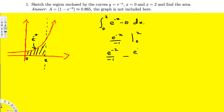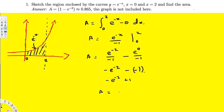Minus e^(0) divided by -1. Since e^(0) = 1, this becomes e^(-2) / (-1) minus 1/(-1). That gives e^(-2) / (-1) plus 1, which simplifies to 1 - e^(-2). Therefore, the area equals 1 - e^(-2), which is approximately 0.865. And that's how we do this kind of problem.